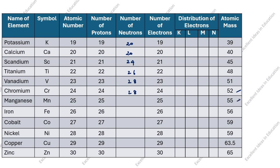Manganese: atomic mass 55, atomic number 25, it comes to 30. Iron: atomic mass 56, atomic number 26, it comes to 30. Cobalt: atomic mass 59 minus 27 is 32. Nickel: atomic mass 59, atomic number 28, it comes to 31.